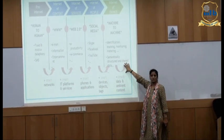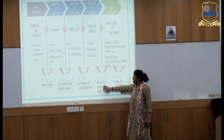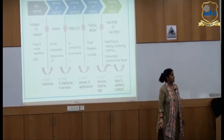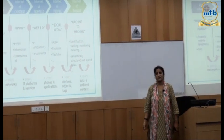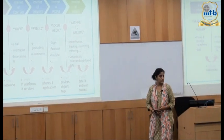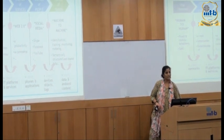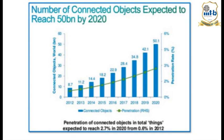Now things get connected to the Internet — we have smart devices, smart objects, smart data, and smart ambient context. This is an old projection, but the blue bars show the number of connected objects growing exponentially all over the world, with more and more objects getting connected to the Internet day by day.